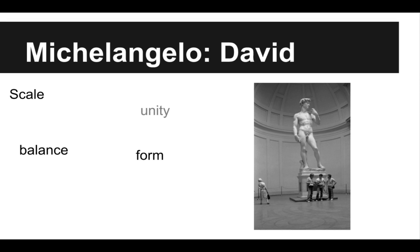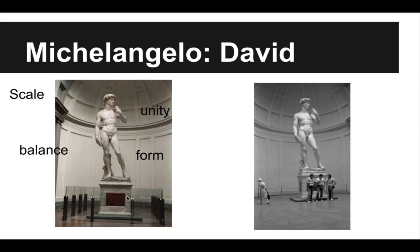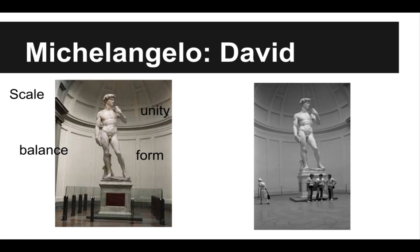This is an example of the David sculpture. I gave you two different views of it, because the one with the people in really helps you understand the size of the piece. We're seeing Michelangelo really manipulating the idea of scale. Scale has to do with the size of something in comparison to something else. Seeing the sculpture up against people, you really understand the grand scale of this sculpture.